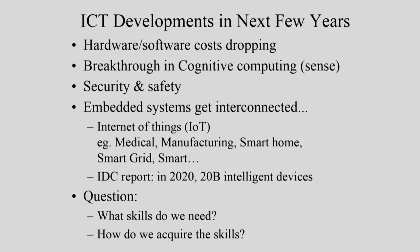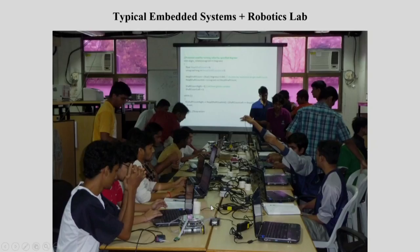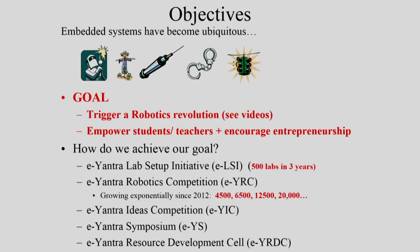So what are the skills we need and how do we acquire them? We feel that project-based learning is very important — you learn by doing. What we have here is the eYantra robot, a robotic research platform shared with students who work on a laptop and learn all the skills they need in a lab. We have a project called eYantra based out of IIT Bombay where we are trying to trigger a robotic revolution by empowering students and teachers and encouraging entrepreneurship.